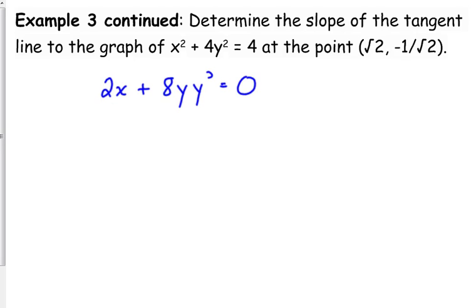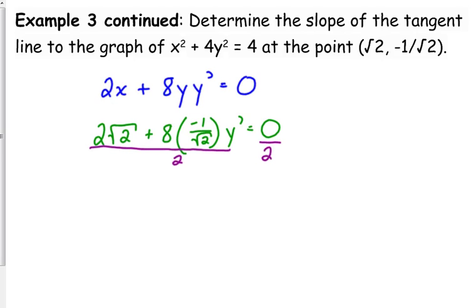I'm going to do the same thing. I'm going to go ahead and plug in my point and then solve for y prime. A lot of times that can be easier. So plug in the square root of 2 for x, plug in negative 1 over the square root of 2 for y, and then we're going to solve for y prime. The first thing that we can do is we can divide the entire thing by 2. That'll make life easier. The square root of 2 plus 4 times negative 1 over the square root of 2, y prime is equal to 0.